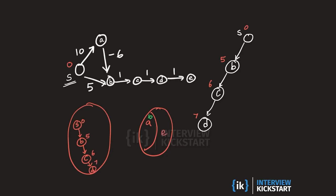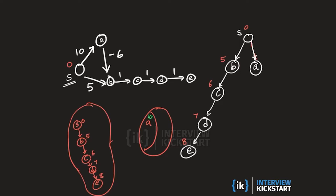When we look at d's outgoing neighbors we see e, which was undiscovered so far. We insert e into the priority queue with a distance value of 7 plus 1, which is 8. In the next step we extract e and set its final distance value to 8. The only element left in the priority queue is a, with a tentative distance value of 10, so we pull a out and it becomes the direct child of s with a label of 10.